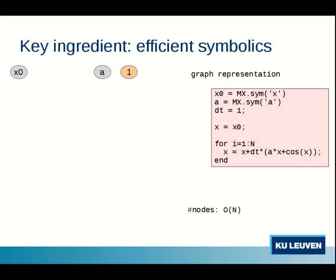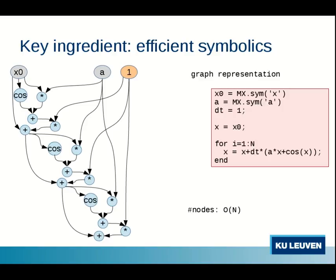What would it look like in an efficient implementation? You would use a graph representation with symbolic primitives on top and construct a graph with nodes and arrows. In the first for loop we compute a times x with a multiplication node, we compute the cosine, add these together, multiply with dt, add it to x, and so on. Now we're at the expression of the state at time 1. When we loop through the for loop we just repeat this block, so you get a number of nodes that is linear in the number of for loop iterations.